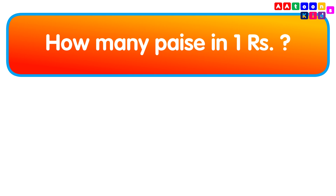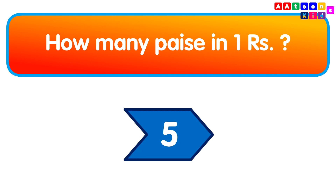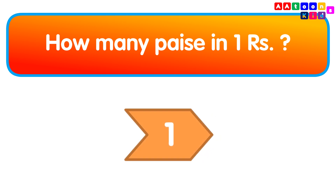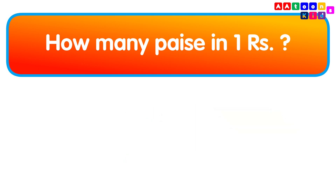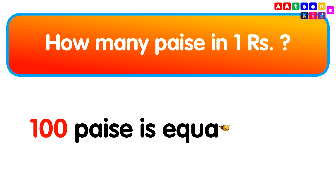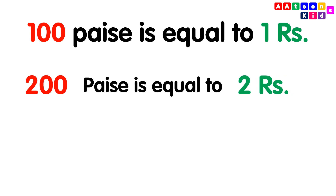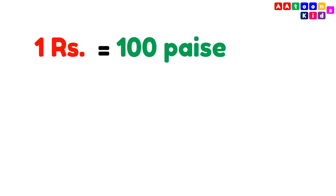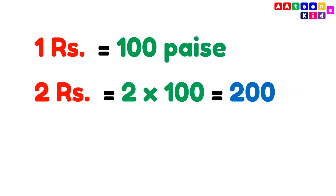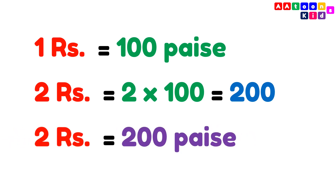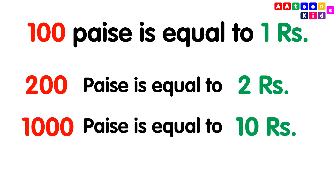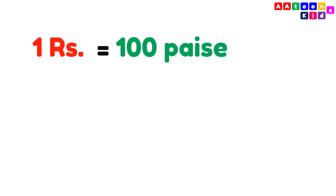How many paise in 1 rupee? 100 paise equal 1 rupee. 200 paise is equal to 2 rupees. 1 rupee is equal to 100 paise, so 2 rupees is equal to 2 multiplied by 100, which equals 200 paise. So 2 rupees is equal to 200 paise.